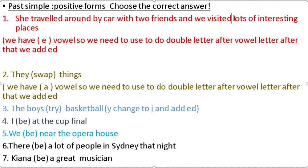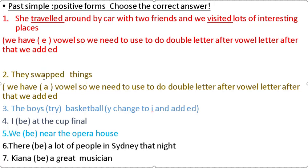'Visit' — just add -ED. 'She traveled around by car with two friends and we visited lots of interesting places.' For 'swap': we have a vowel, so we need to double the consonant letter after the vowel letter, then add -ED.